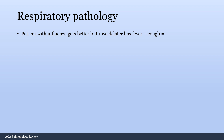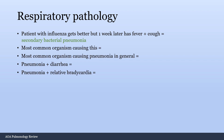A patient with flu who gets better but one week later has fever and cough — that is secondary bacterial pneumonia. The most common organism causing this is Staph aureus. The most common organism causing pneumonia in general is Strep pneumo. Pneumonia plus diarrhea — that is Legionella. Pneumonia plus relative bradycardia: normally fever causes tachycardia, but if someone has pneumonia and their heart rate is 65, that's again Legionella or atypical walking pneumonias.